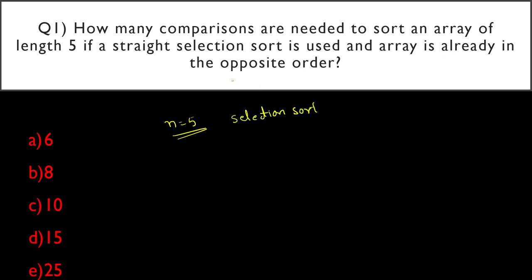The important thing to notice is that the array is already in opposite order. Suppose we want to sort the array in ascending order — so we have five numbers 1, 2, 3, 4, 5 but the array is currently in totally opposite, i.e., descending order. Our goal is to make it 1, 2, 3, 4, 5. How many comparisons will we make?